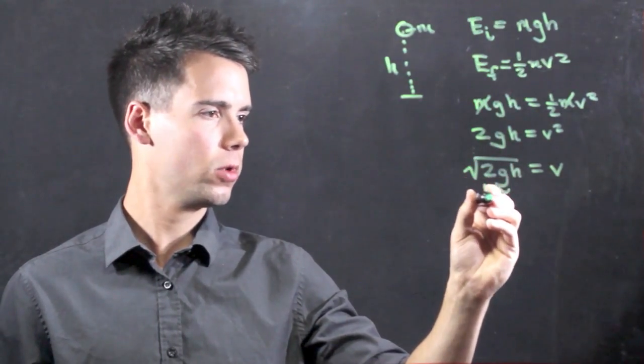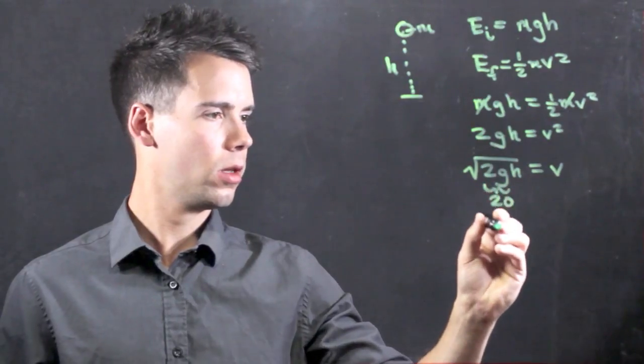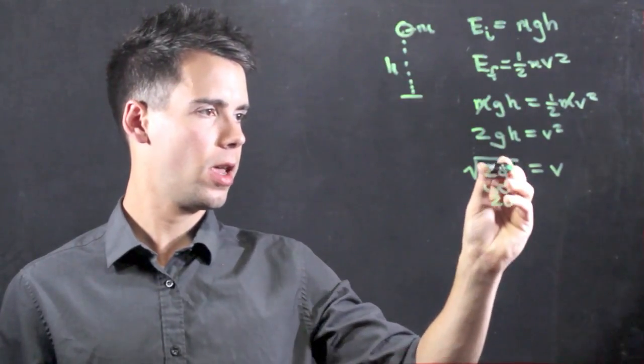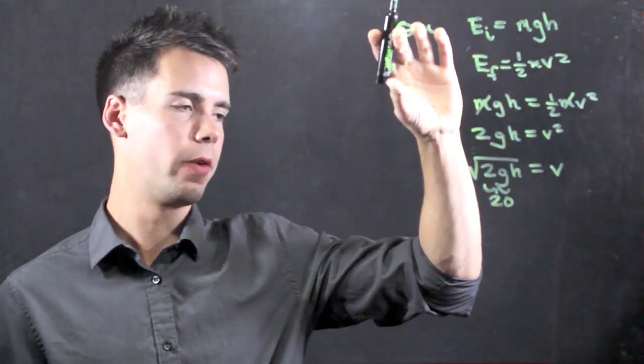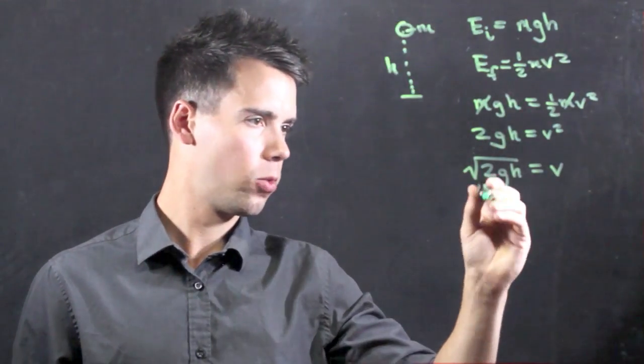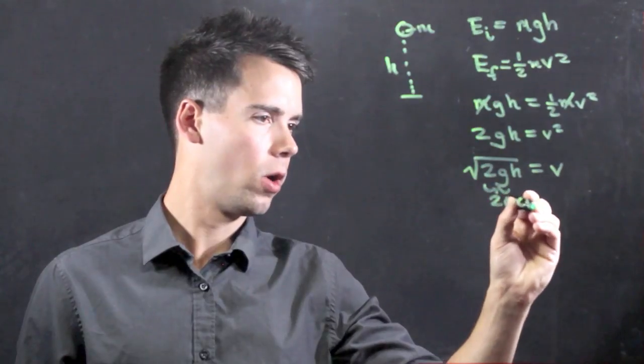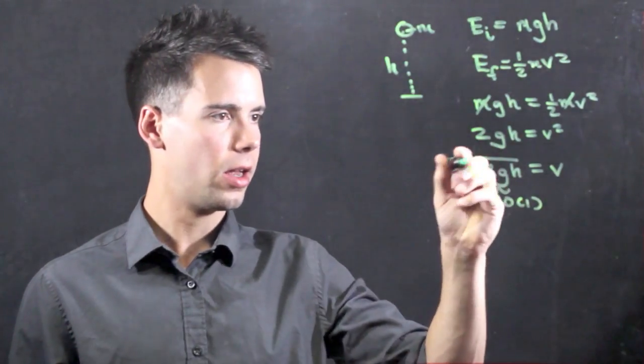So if we say g is 10 m/s squared, this term turns into 20 m/s squared, and h, we can say the ball is 1 m above the surface of the Earth. So it's 20 times 1 inside of the radical.